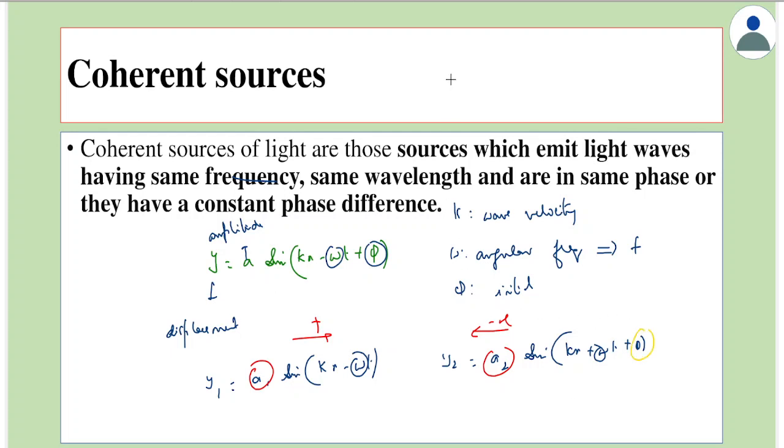They also have a constant phase difference. Remember for omega, if the waves are same frequency and if they travel in the same medium, they will have same wavelength also. So frequency and wavelength would be same in the same medium and this phi means a constant phase difference. These two are said to be coherent sources.